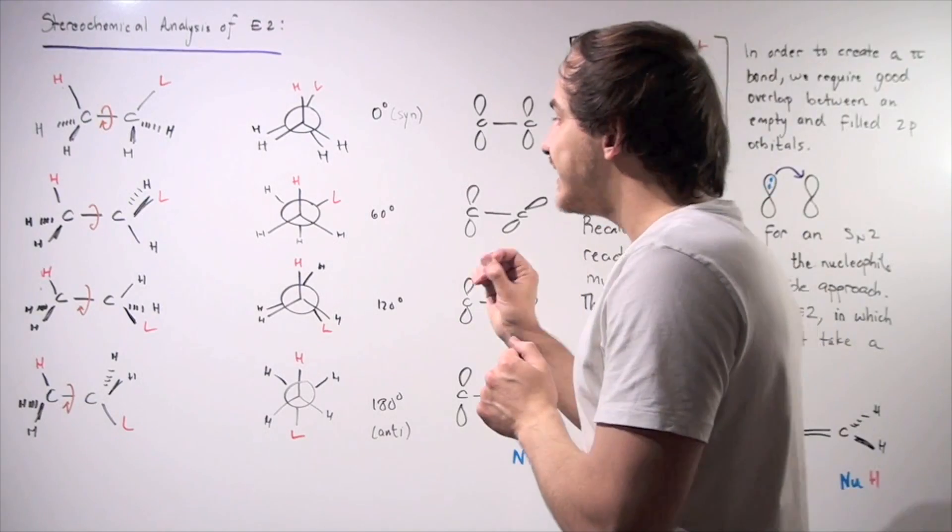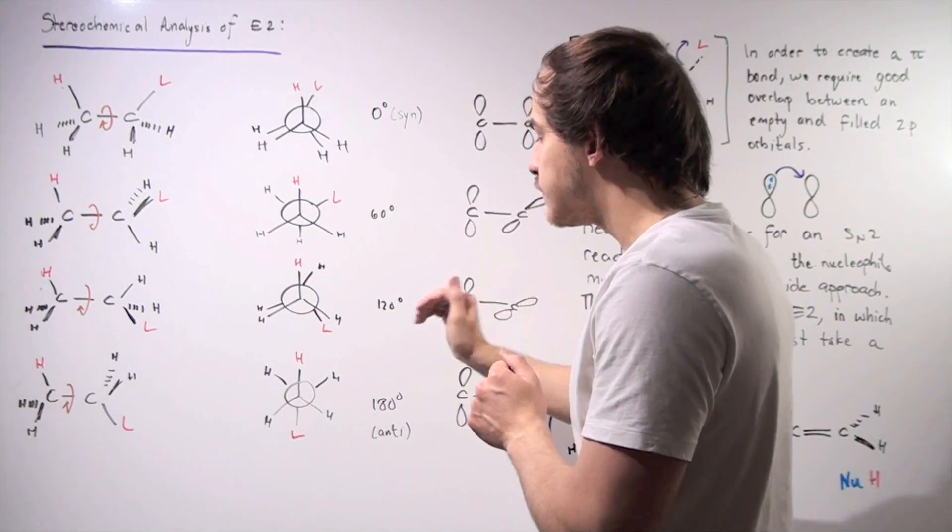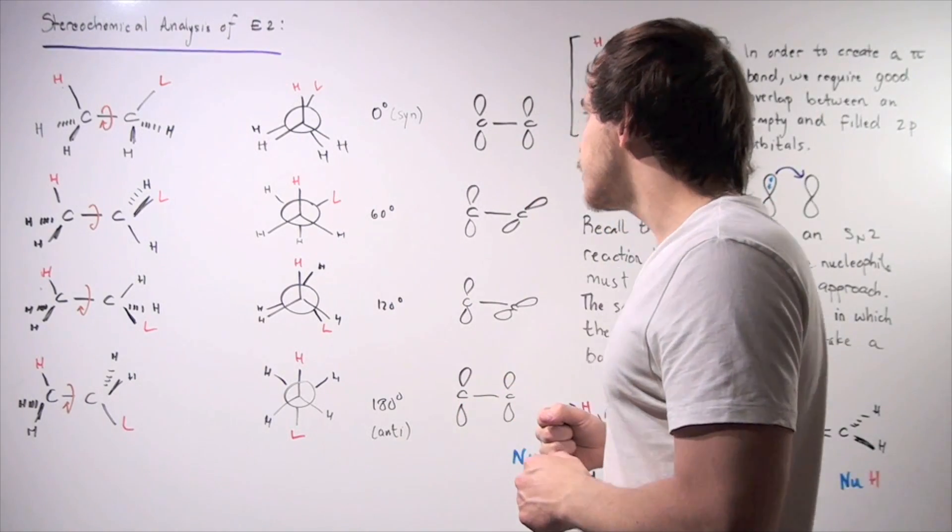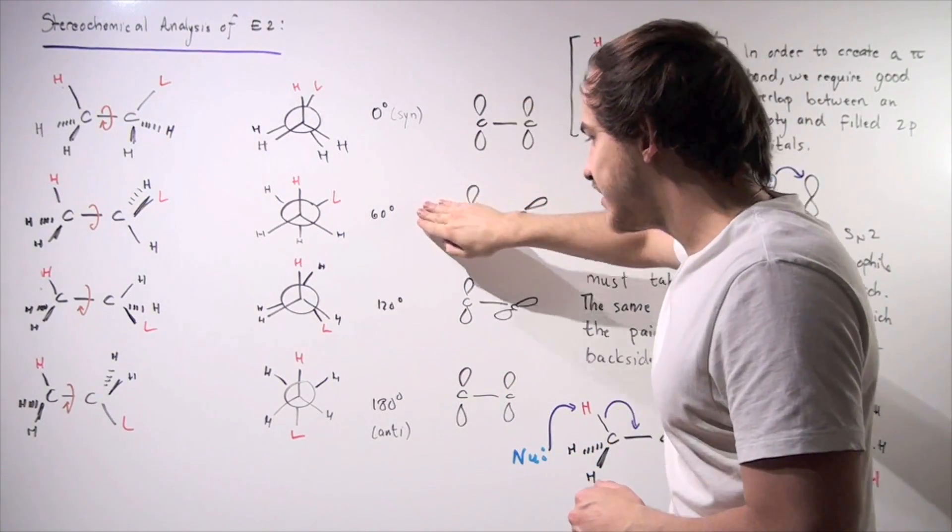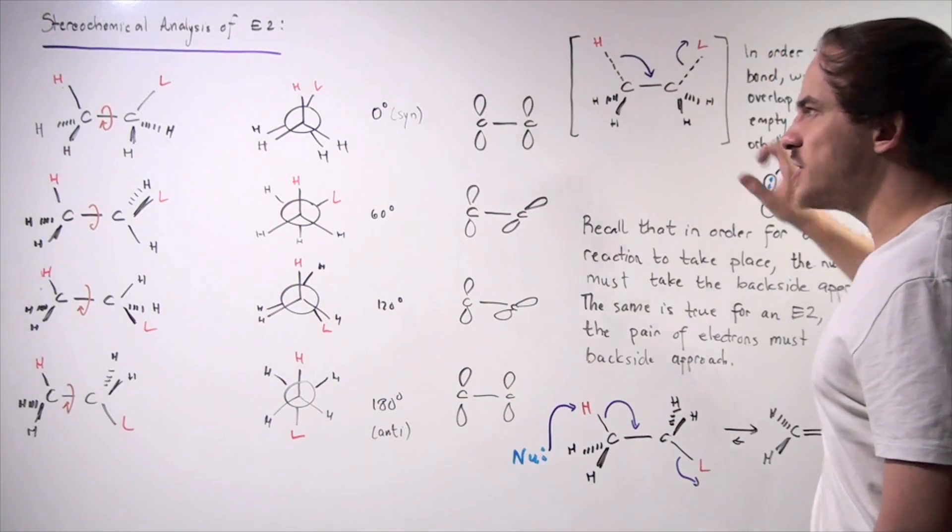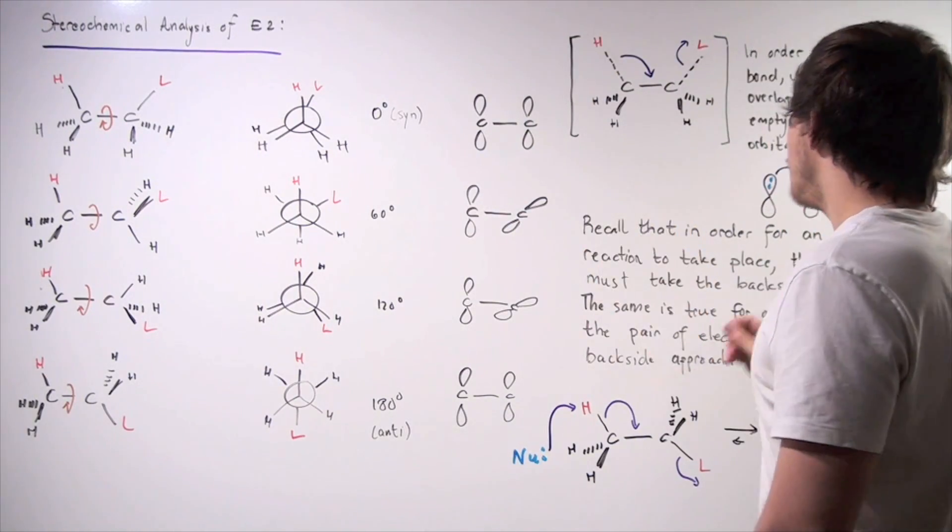Now, we want to find out which one of these conformations will lead to our E2 reaction. So is it zero, 60, 120, or 180? So let's examine the transition state of our E2 reaction.